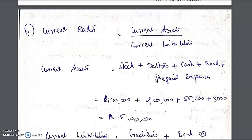The first ratio asked is the current ratio, which is current assets over current liabilities. Current assets are any assets you can convert into money within one year. Similarly, current liabilities are any liabilities that must be paid within one year — that is, within 365 days.